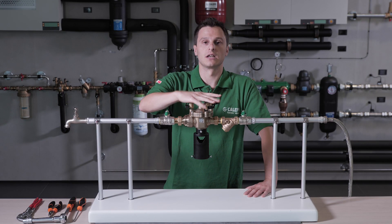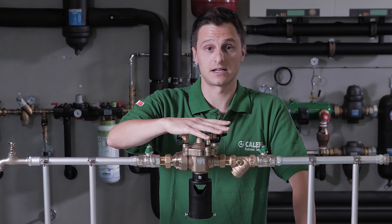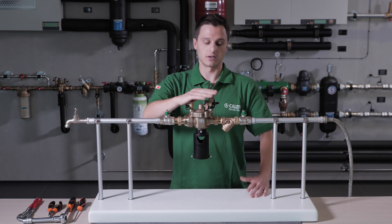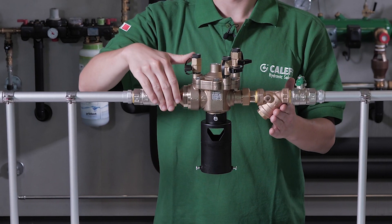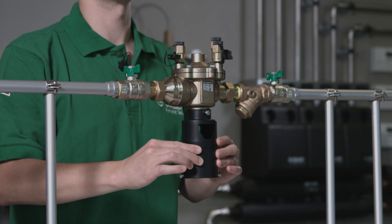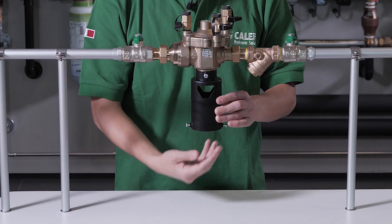The backflow preventer installation point must have easy access. The backflow preventer must be installed in a horizontal position and its discharge line connected with a discharge pipe.